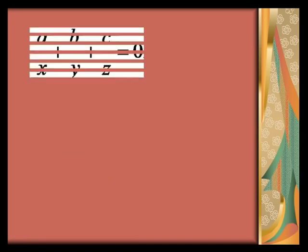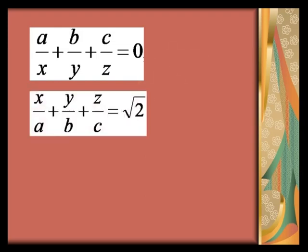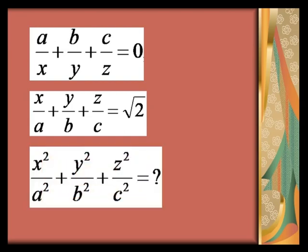The question is: if a/x + b/y + c/z = 0 and x/a + y/b + z/c = √2, then what is the value of x²/a² + y²/b² + z²/c²?